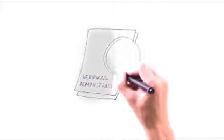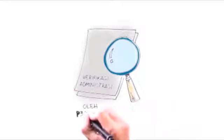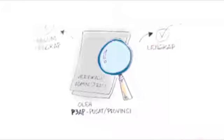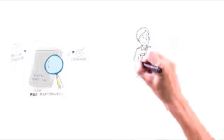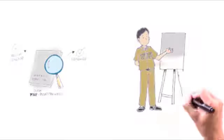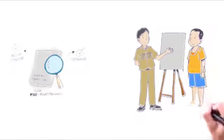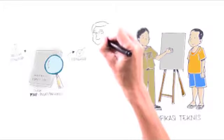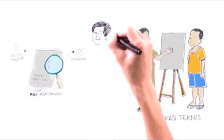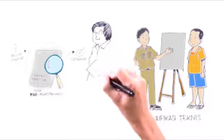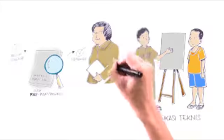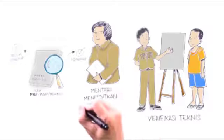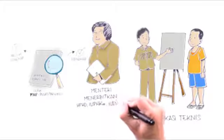Afterwards, the verification team will conduct administrative verification within three working days. If the application is incomplete, the documents will be returned to be completed by the applicant maximally within seven working days. Once the documents have been completed, technical verification will be undertaken maximally within seven working days. Then, a report of technical verification is drawn up, followed by the issuance of the village forest management right, license on the utilization of community forestry, or license for utilization of timber from community plantation forest by the minister, which will be valid for 35 years.